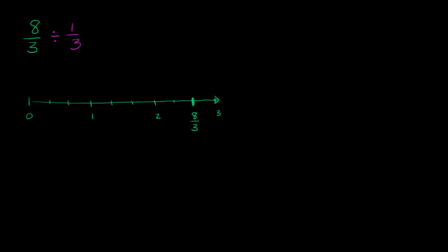If we're trying to take jumps of 1 third, we're going to have to go 1, 2, 3, 4, 5, 6, 7, 8 jumps. So we could view this as, I'm going to do this in a different color, in this orange. So we took these 8 jumps right over here. So we could view 8 thirds divided by 1 third as being equal to 8.